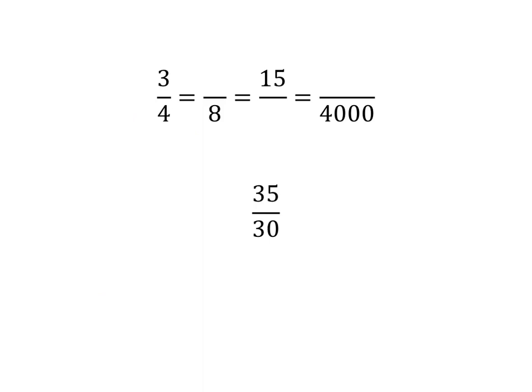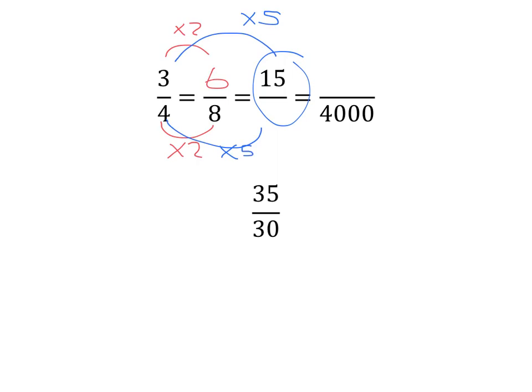Let's practice making equivalent fractions. We know that if we multiply or divide the top and bottom of the fraction by the same thing, we get an equivalent fraction. Let's look at how we can get a whole lot of fractions equivalent to three-quarters. To get from four to eight, you've multiplied by two, so you do the same to the three and get six-eighths. To get to the next one with 15, you've multiplied the three by five, so the denominator must also be multiplied by five — four times five is 20. And to get to four-thousand, multiply by a thousand, giving three-thousand over four-thousand.